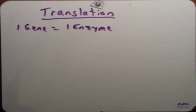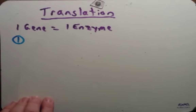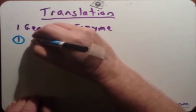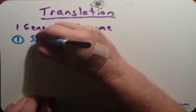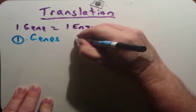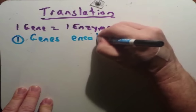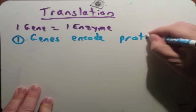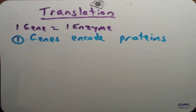The first exception is that they thought of genes as coding for enzymes, which they do. But it's also important to know that not all proteins are enzymes. We can list this more broadly as: genes encode proteins — not just enzymes, but proteins.